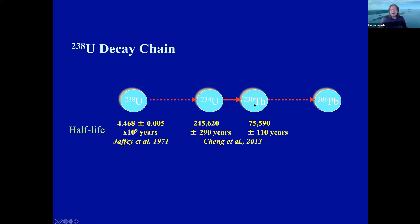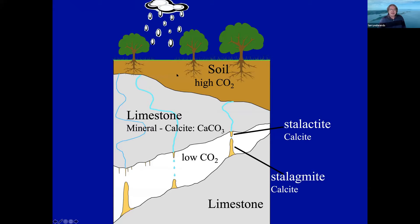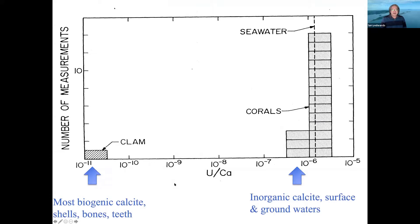With time, thorium-230 ingrows. Thorium-230, as indicated by its half-life, is also radioactive, so with time it approaches a steady-state value — that's kind of the end of the chronometer. That's why you can't go past 650,000 years. Distilled water — essentially rainwater — comes in, percolates through the soil and limestone, picks up uranium but leaves behind the thorium, which is not particularly soluble. You precipitate out high uranium and no thorium. Thorium ingrows, and that's the basis for the chronometer.